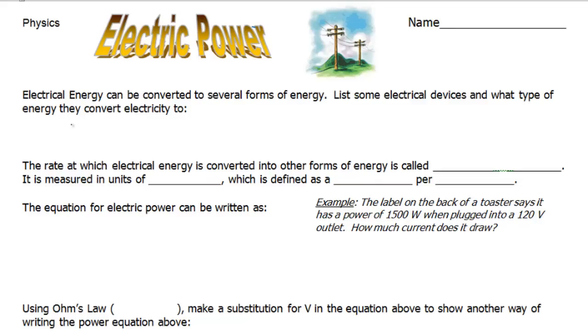So, let's list some devices and what type of energy they convert electricity to. When we plug in, say, a light bulb, that light bulb is converting the electric energy into thermal energy and light or radiant energy. Light bulbs convert electric energy into thermal energy and radiant energy, light.